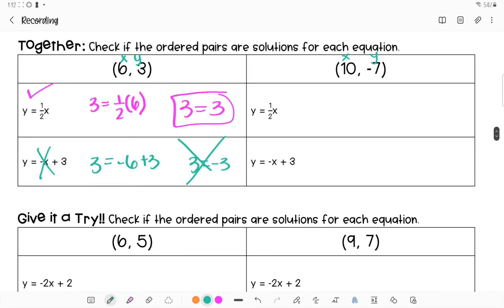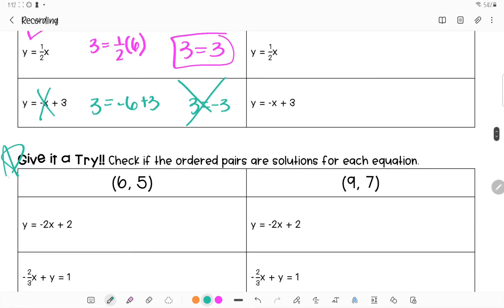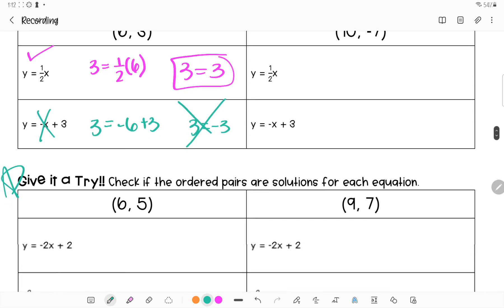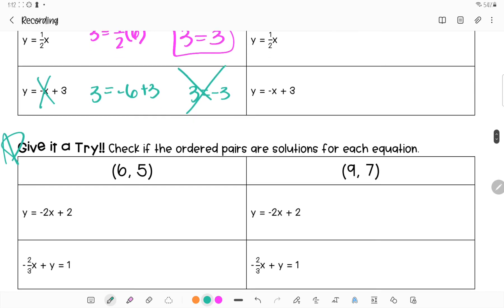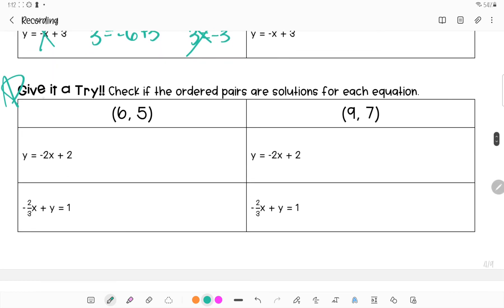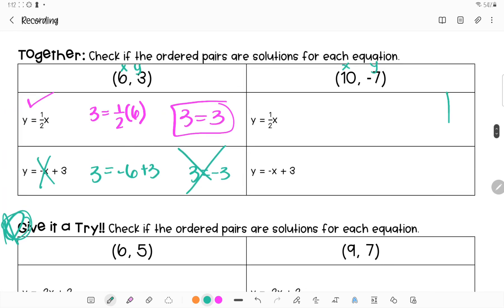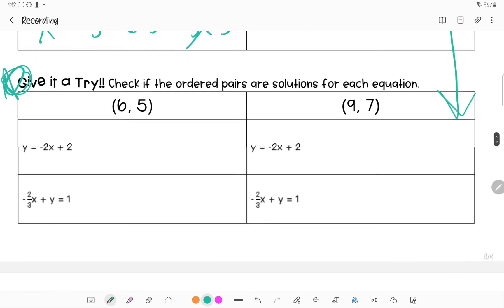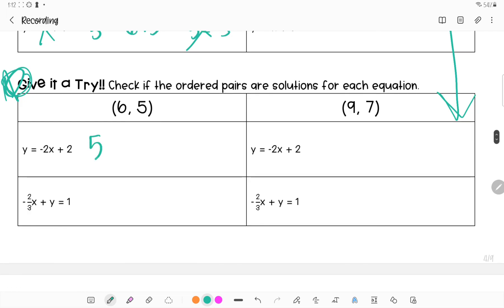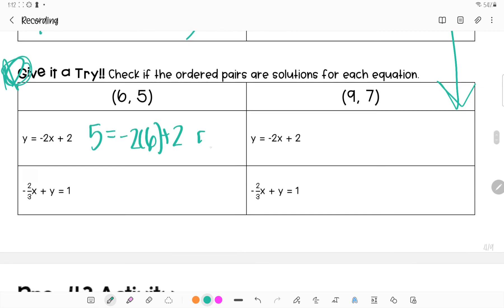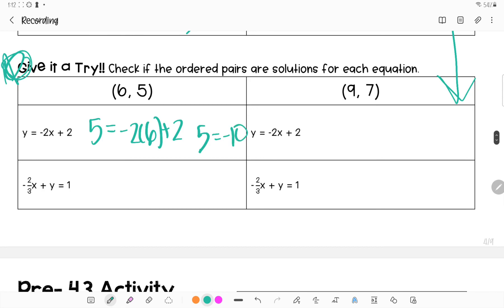We're going to do this one here and then you'll do these down here on your own. We replace y with 5 and do negative 2 times 6 plus 2. That will give me negative 12 and then add 2 which will give me negative 10. That one is not a solution.